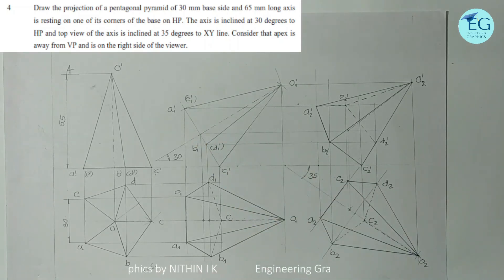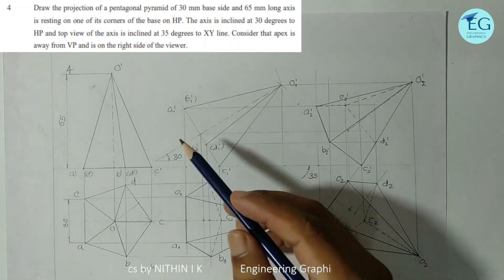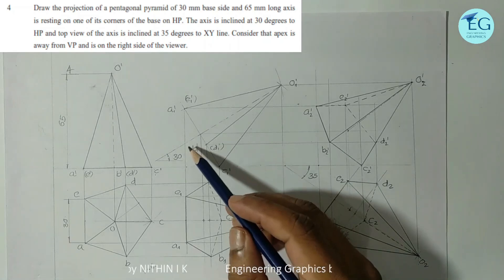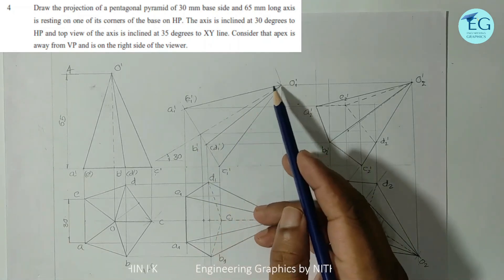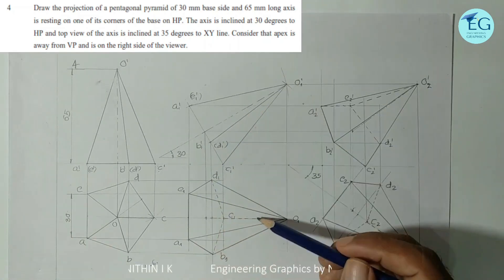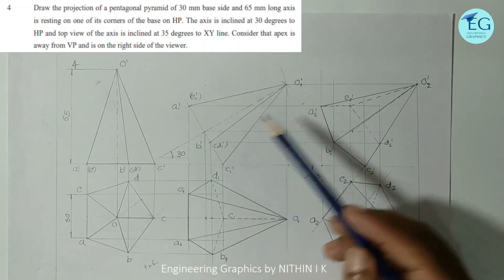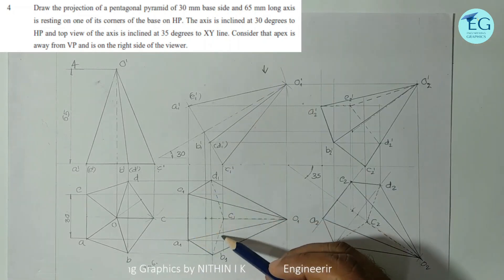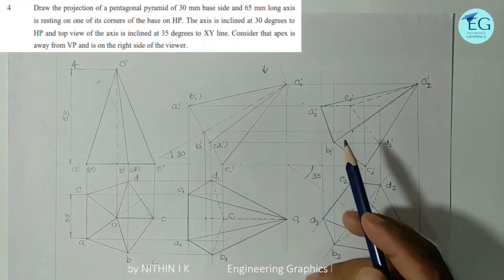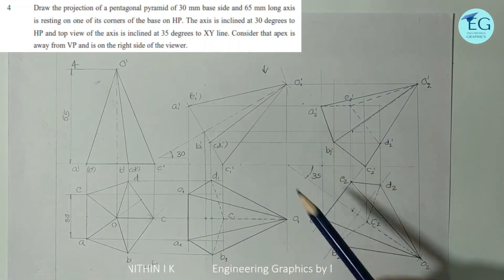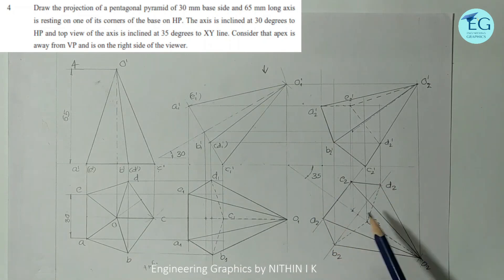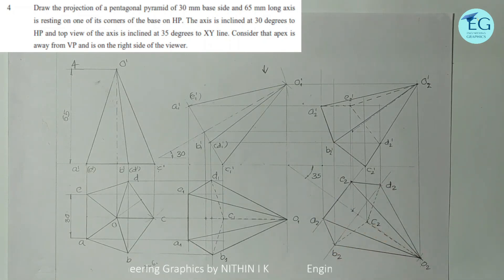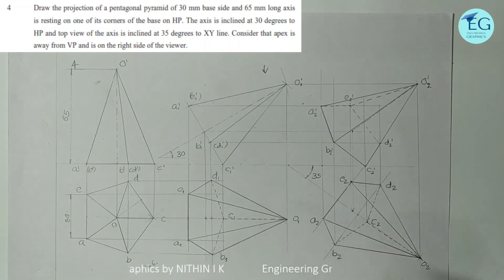The angle to the axis is 90 minus 60 degrees. Top view is now complete. The top view shows invisible lines on the left side. In the next stage, we change the VP inclination so that the top view of the axis is inclined at 35 degrees to the XY line.